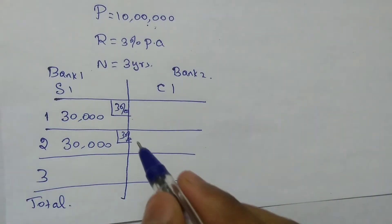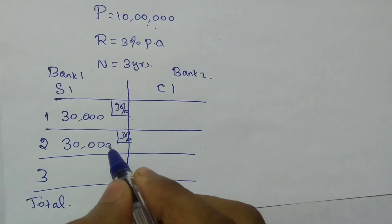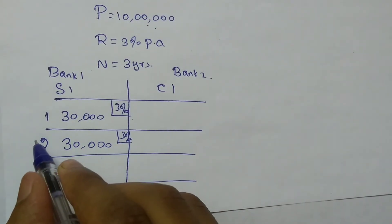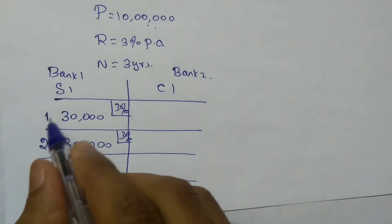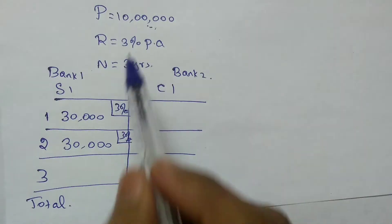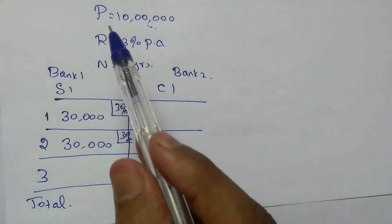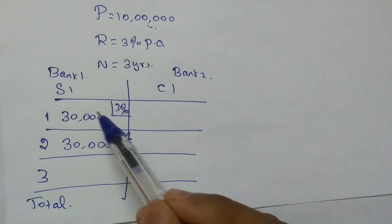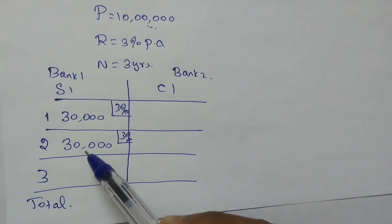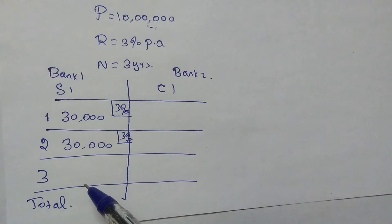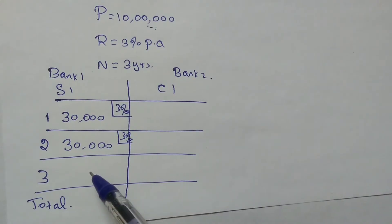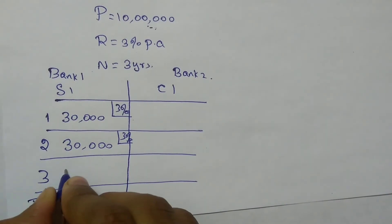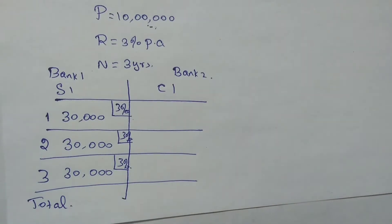If you plan to settle the total interest at the end of two years, you have to pay 30,000 + 30,000 = 60,000. If you settle the complete loan at the end of two years, you have to pay the principal plus total interest: 30,000 + 30,000 + 10 lakh = 10 lakh 60,000. Even if you don't have sufficient funds at the end of two years, there is no problem — you can pay at the end of three years and it will not have any impact. At the end of the third year, once again 3% of 10 lakh is 30,000 rupees, so totally 30,000 + 30,000 + 30,000 = 90,000 rupees.